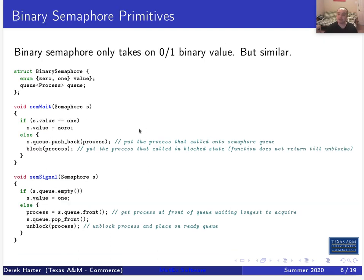The previous was known as a general or counting semaphore. There's also a variation called a binary semaphore. As the name implies, it only takes on a value of zero or one. If it's one, the semaphore is available. If we call sem_wait and the value is one, we set it to zero — making the semaphore unavailable — and we just enter.